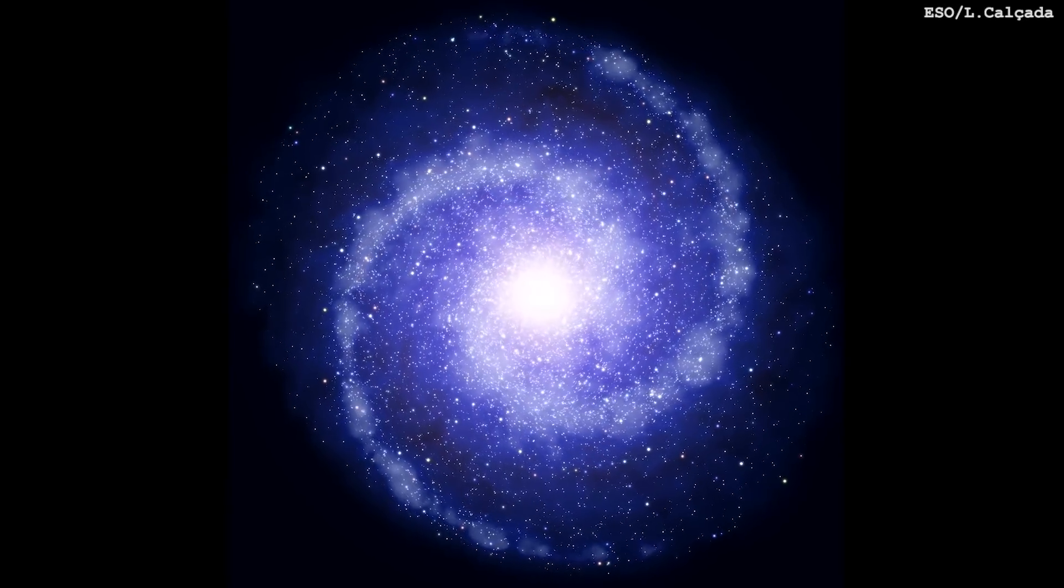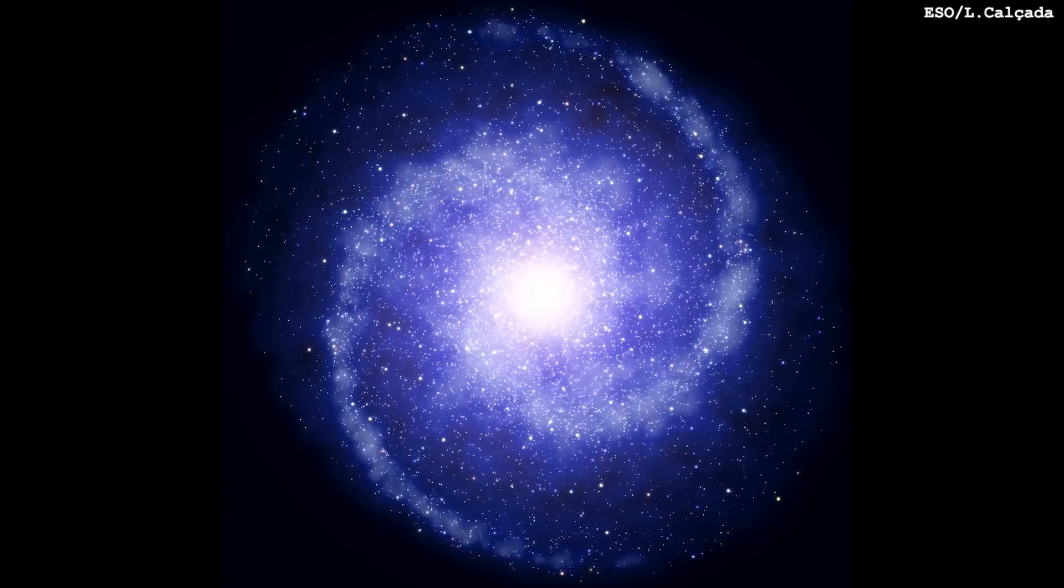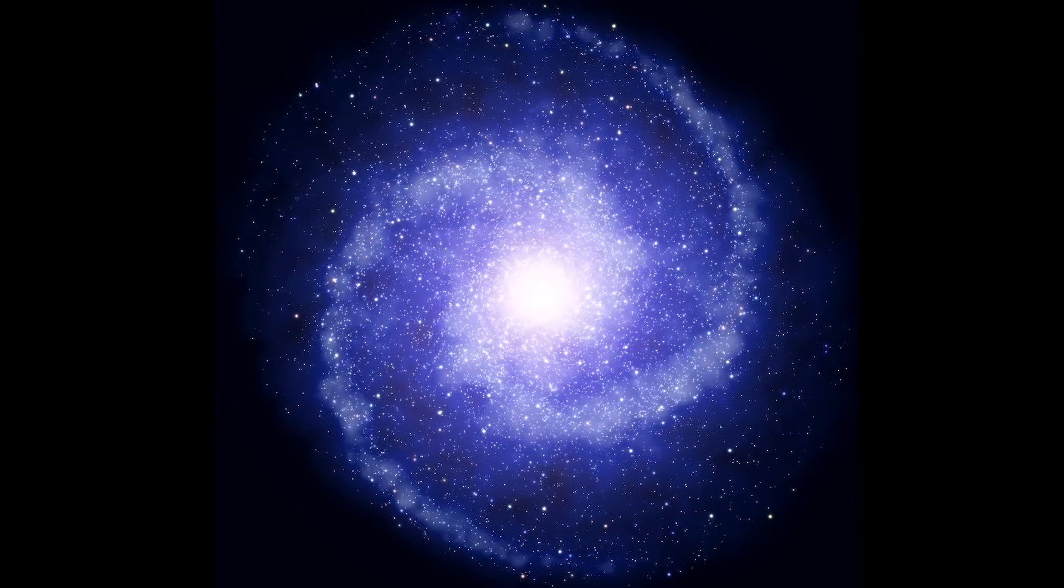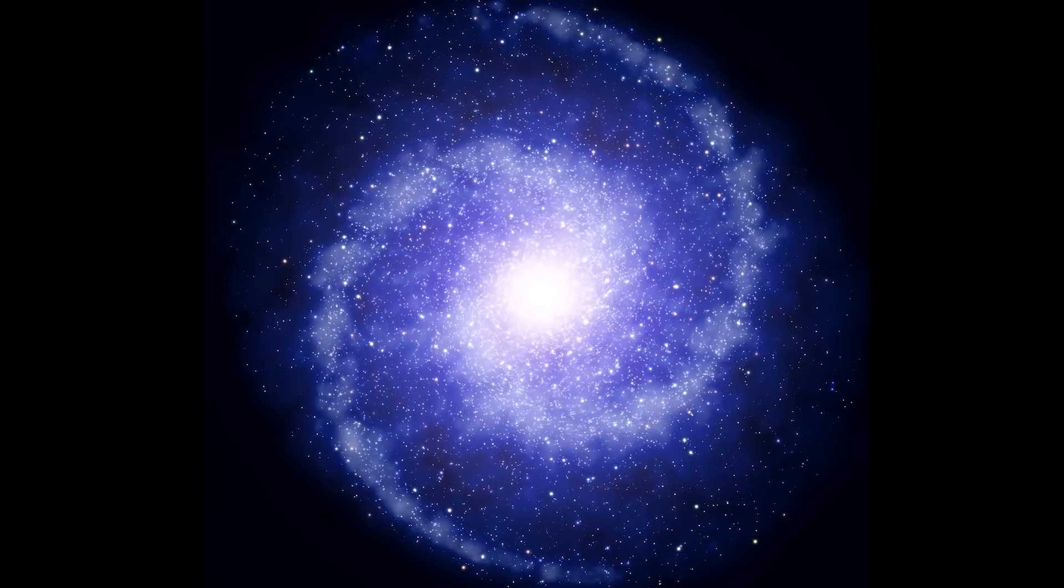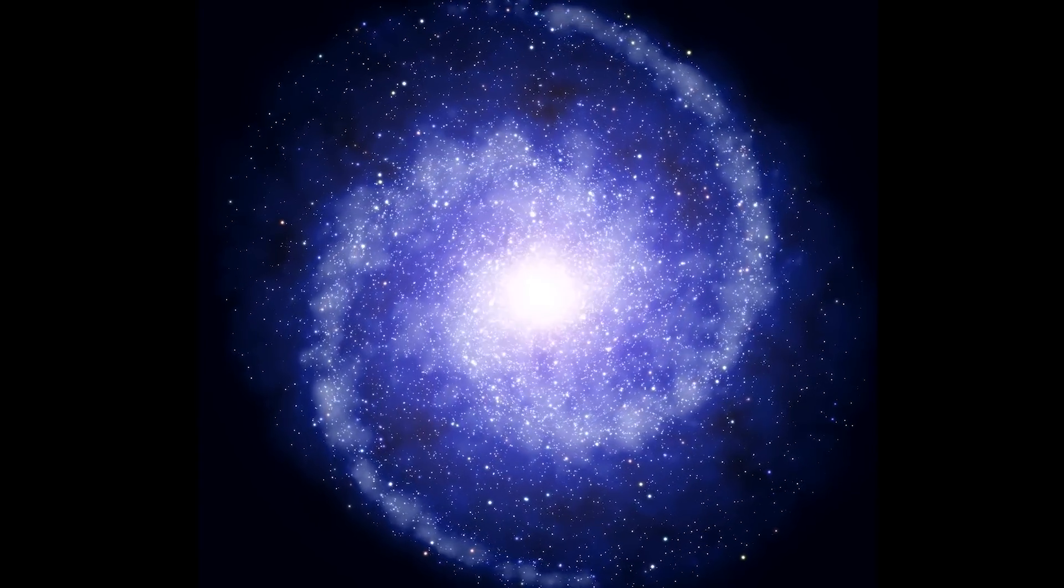Basically, stars orbit around the center of our galaxy, just like planets orbit our sun. In our solar system, the inner planets orbit much quicker than the outer planets. In order to make the outer planets move faster, we would have to add more mass into the system.